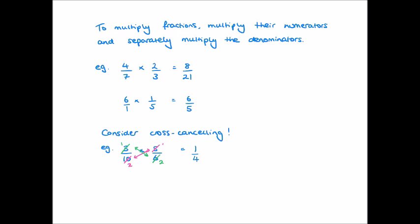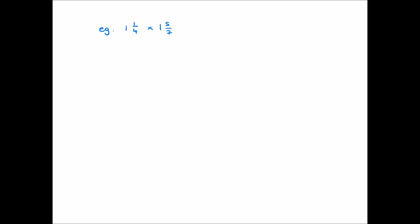The process is identical when multiplying mixed numbers, but only once we've written them as improper fractions. For example, one and a quarter multiplied by one and five-sevenths. For one and a quarter: multiply one by four to get four, add the numerator one to get five, keeping the denominator four — so five quarters. For one and five-sevenths: one times seven is seven, add five to get twelve, keeping the denominator seven — so twelve sevenths.